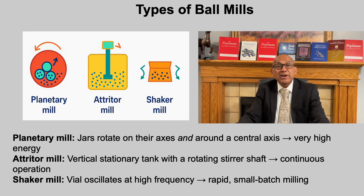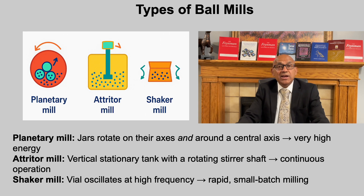Different mill designs achieve similar goals through distinct motion paths. A planetary mill has jars rotating on their own axis while orbiting a central axis, producing very high energy and shear, ideal for small batches and alloying research. An attriter mill uses a stationary vertical tank with a rotating stirrer shaft, enabling continuous operation and larger batch sizes, well suited to industrial nanocomposites. A shaker mill rapidly oscillates a vial, giving moderate energy and small batch capacity, useful for quick laboratory tests or mechanochemical reactions.